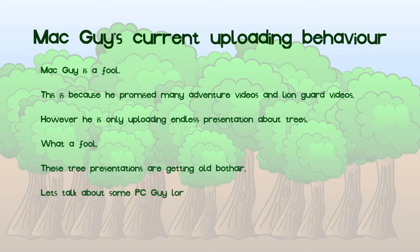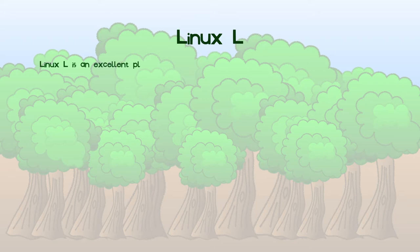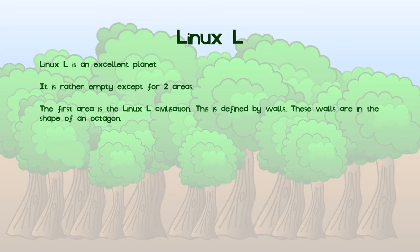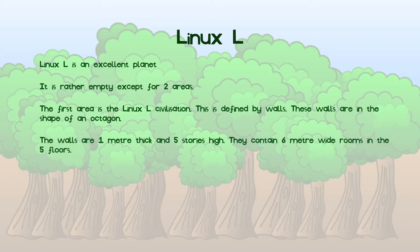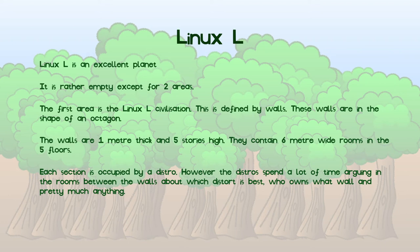To verge away from trees, some Linux guy lore shall be discussed, as it has not been covered much. This slide is on Linux L. I do not know why it has a tree background still, but I can't be bothered to grab a Linux L background. How lazy. Linux L is an excellent planet. It is an empty planet and only has two major features. The first major feature is called the Linux L civilization. This is defined by walls — how Donald Trump-esque. Walls have an amazing shape that has 8 fantastic sides and 8 awesome angles. The walls are thicker than the MacGuy fence, being 1 meter thick compared to 40 centimeters, and also much higher at 5 stories. They contain 5 stories as well, within 6-meter-wide rooms inside the walls themselves. Each of the 8 segments is occupied by a town. Within the town live Linux guys who support a certain distribution. They are very loyal to their favorite distribution and will often spend many hours in the rooms between the walls arguing about the best distribution.